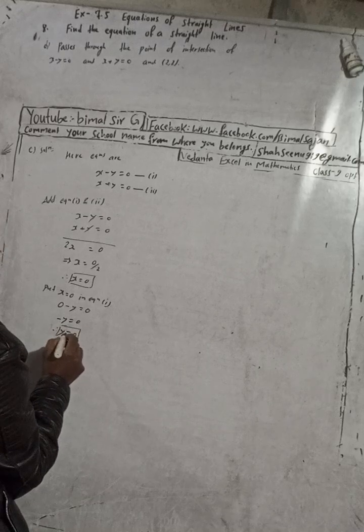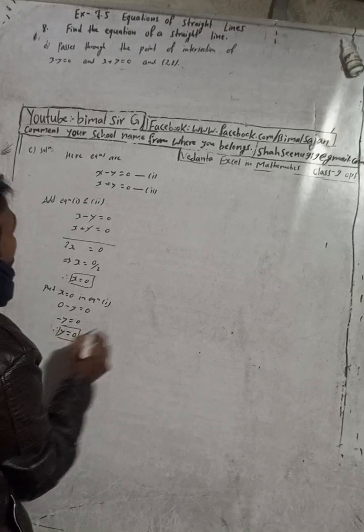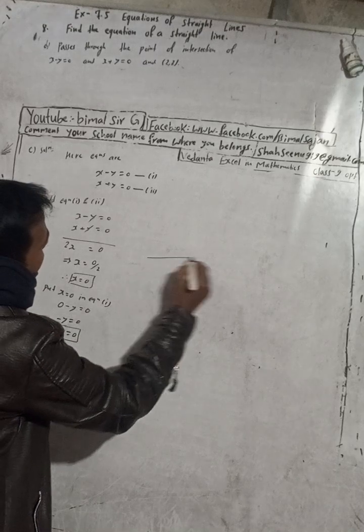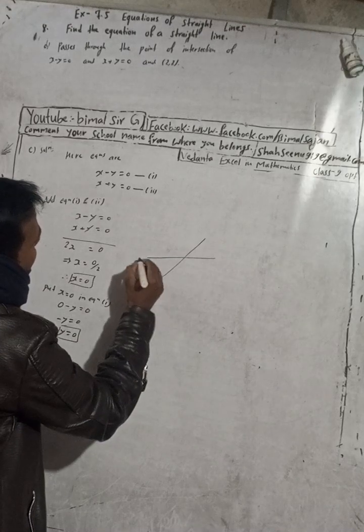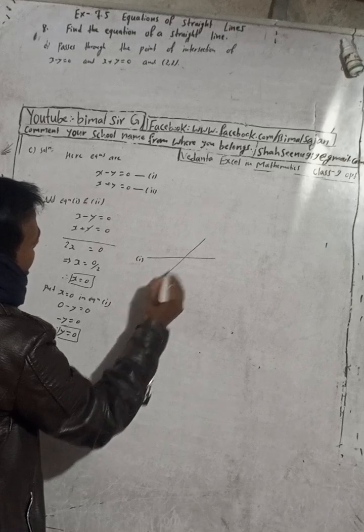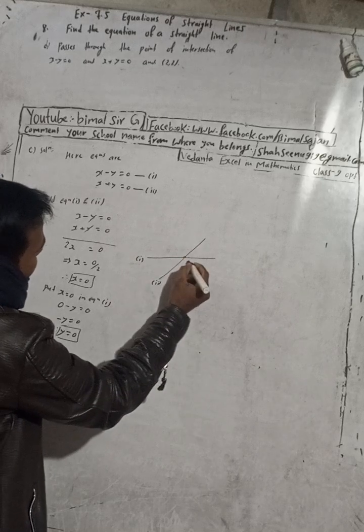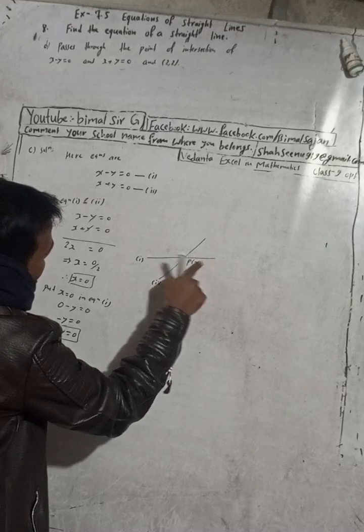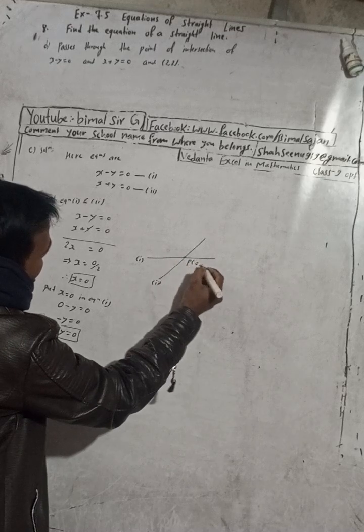So now we got here passes through the point of intersection. So this is our one line, this is other line. So this is our equation 1, this is our equation 2, and the point of intersection, this is the point here, let this be x 0, 0.